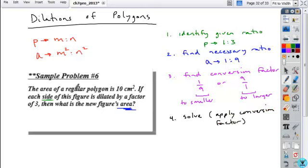So then the final step is to apply your conversion factor and solve your problem. In this case, we started with a figure with an area of 10 and we want a new one dilated by a factor of three. So is this figure getting bigger or smaller? It's getting bigger, right? Three times as big for each side. So that means we're going to be using this conversion factor.